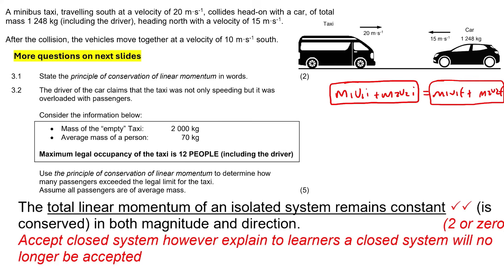So let's go get the proper definition now. Here's the definition. It says that the total linear momentum of an isolated system remains constant. And that's pretty much what you need to say. And then in brackets here, they're just saying is conserved in both magnitude and direction. In 2025, which is when I'm recording this, the department no longer wants us to be using the word closed. We used to sometimes use the word closed over here. Instead of using the word isolated, we would use the word closed. But now they want us to rather just use the word isolated.